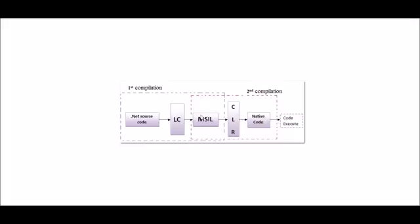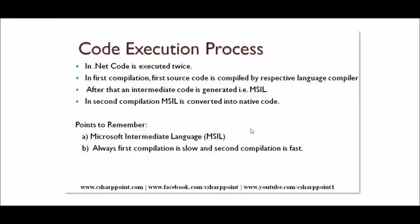In the second compilation, the MSIL code generated by the language compiler goes into CLR — Common Language Runtime — which is the most important part of the .NET framework. CLR converts that MSIL code into native code, also called machine code, and then the code is executed. So in .NET, code is compiled two times: first, source code is compiled by the language compiler generating MSIL; second, MSIL is converted to native code by CLR.